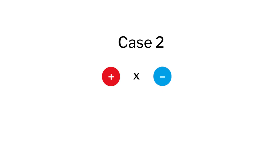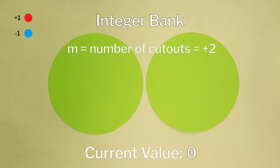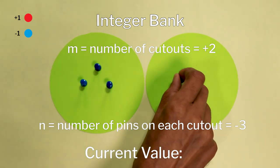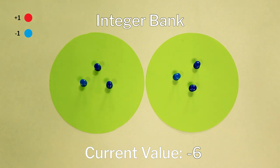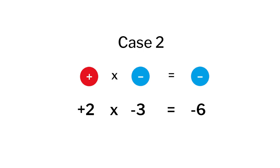Now let us proceed to case 2, that is positive into negative. Here, 2 will be positive and 3 will be negative. Again, ask them to take a blank integer bank and place two cutouts on it. Attach three blue pins on each of them. Count the total pins — our total here is minus 6, that is, the value of the integer bank here is minus 6. Ask students to again note down the sign of the multiplicand, multiplier, and the product or answer: a positive into a negative gives us a negative. This too was very easy for the students.